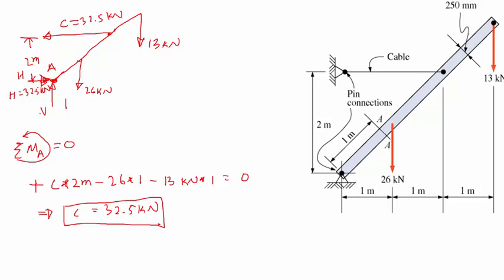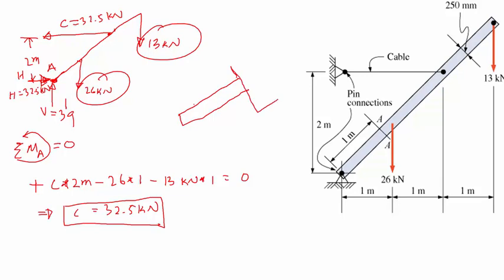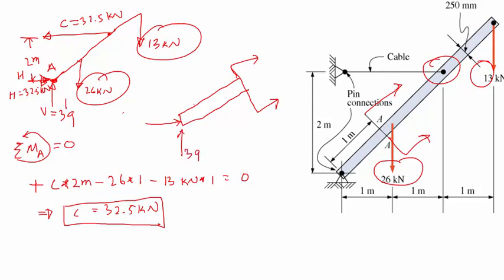Since C is 32.5 kilonewtons, the horizontal force is also 32.5 kilonewtons acting to the right. The vertical force V is the summation of upward forces, giving 39 kilonewtons. Because the problem asks what is happening at cross-section A, we have to cut at that cross-section. When I cut there, I don't see the cable force, the 13 kN, or the 26 kN — only the 39 kN and 32.5 kN remain, acting at a 45-degree angle. To balance the cut piece I will have a downward shear force and a counterclockwise moment.